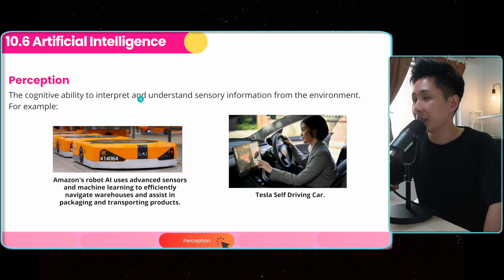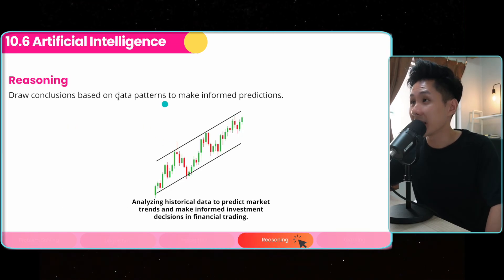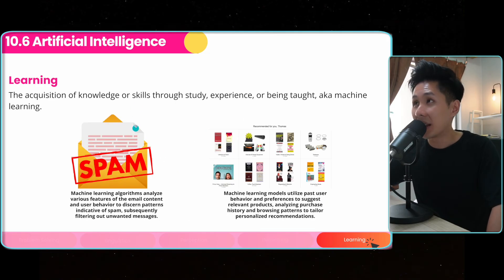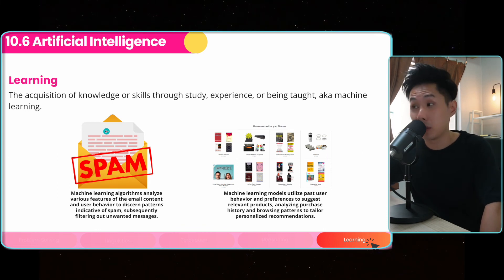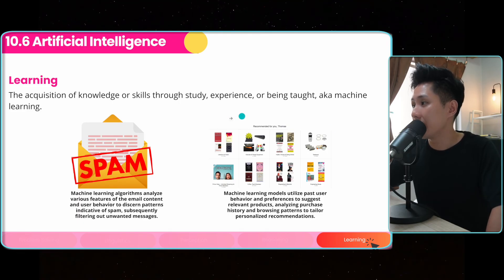Another AI capability is perception — interpreting and understanding sensory information from the environment. For example, Amazon robots operating in warehouses can move without a controller; they move themselves. Tesla's self-driving car is another example. AI can also do reasoning — for example, analyzing historical data to predict market trends and make informed investment decisions in financial trading. And learning — AI can take a bunch of emails, and if humans categorize them as spam, over time the computer can also categorize similar emails as spam. E-commerce websites also use AI to learn what you will likely buy next.